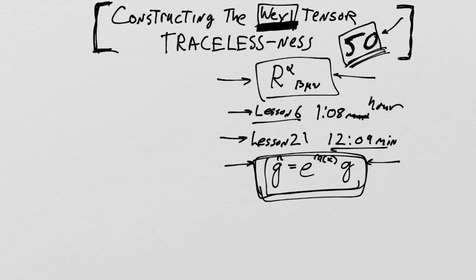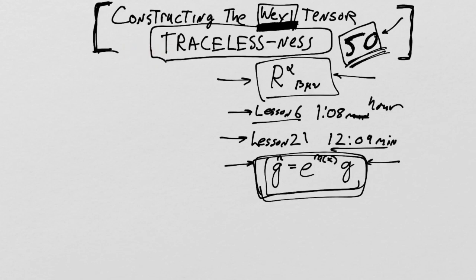So we've worked with conformally related metrics before, but the question of finding a tensor that's fundamental to the spacetime and invariant under this transformation — that's the new subject we covered in the last lecture. But in this lecture, we're going to cover the fact that the Weyl tensor is traceless. So we're going to study the tracelessness — the characteristic of being traceless — of the Weyl tensor, which is not obviously related to the fact that it's conformally invariant.